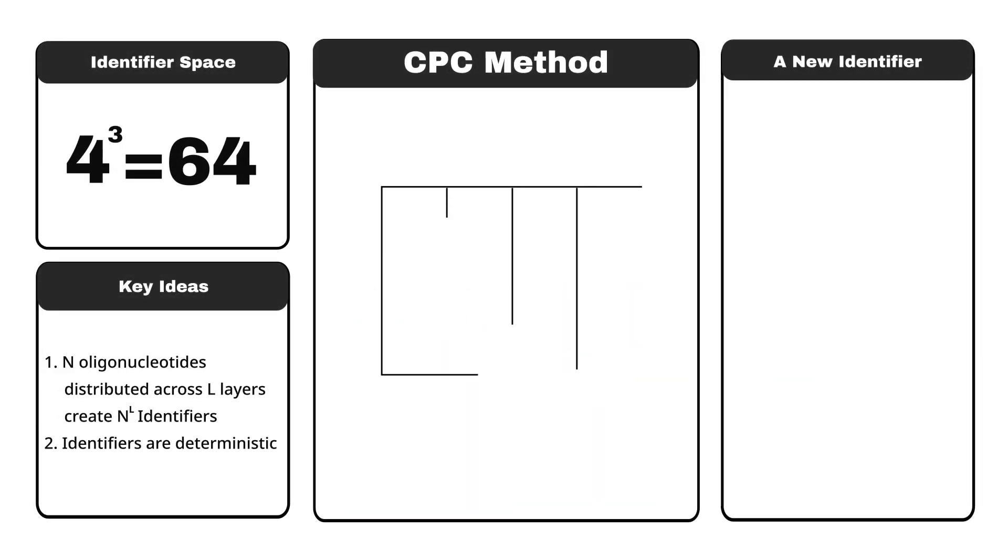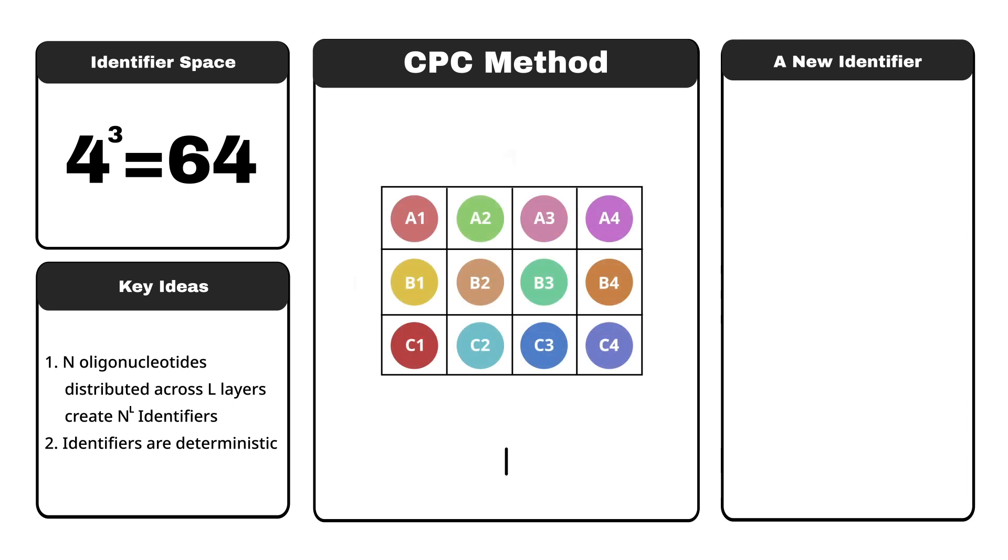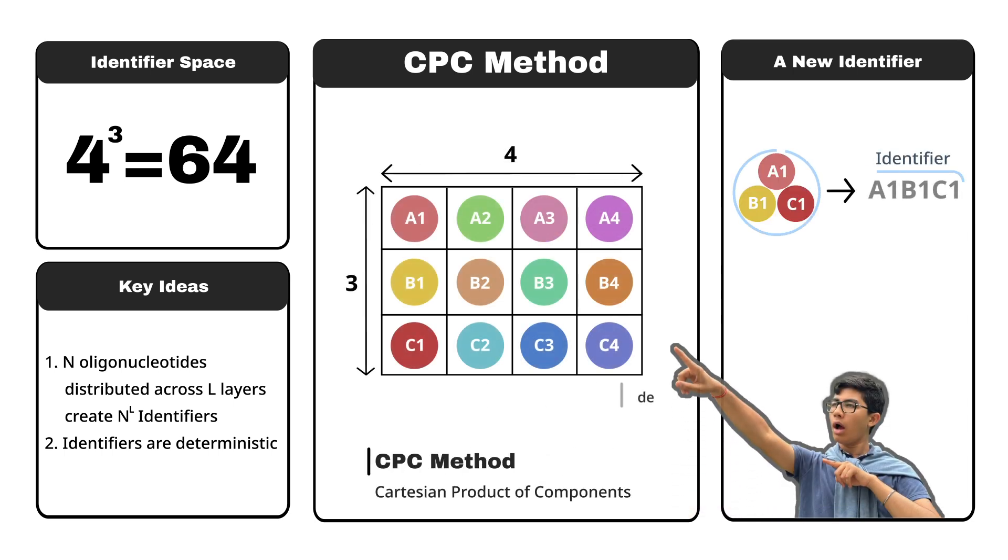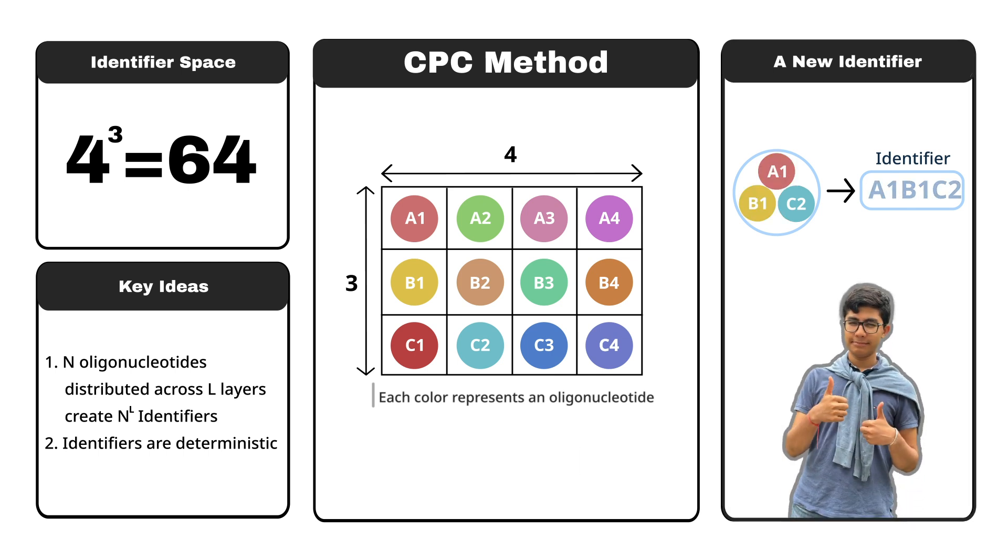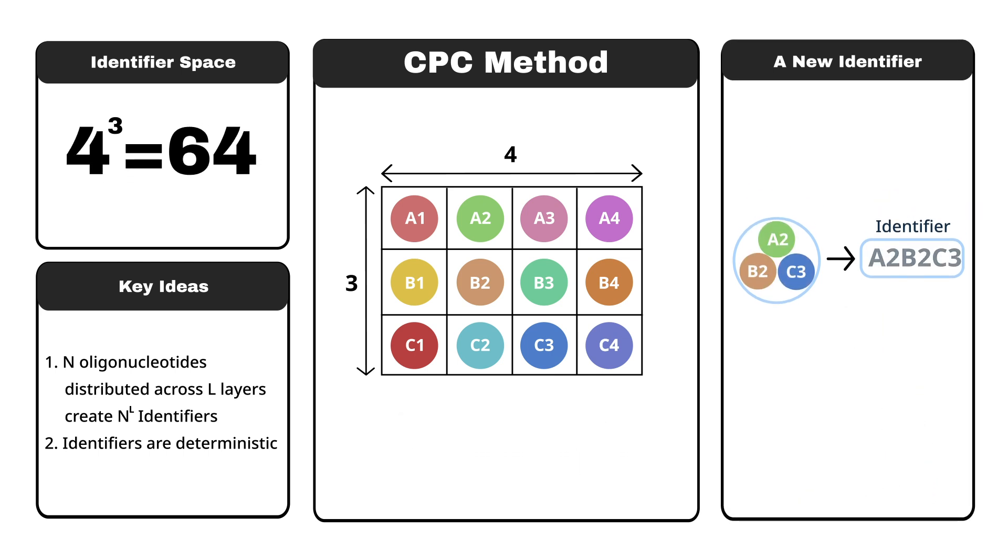Think of oligonucleotides as unique ink colors. Using the CPC method, we mix colors to create shades that encode data efficiently. Arranging oligonucleotides into a table, 12 base colors across three layers create 64 shades, 64 identifiers.